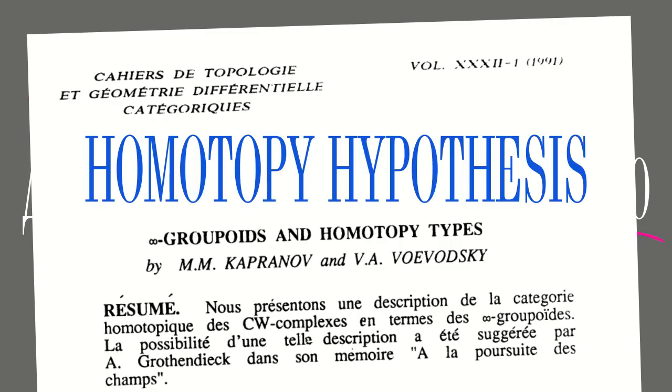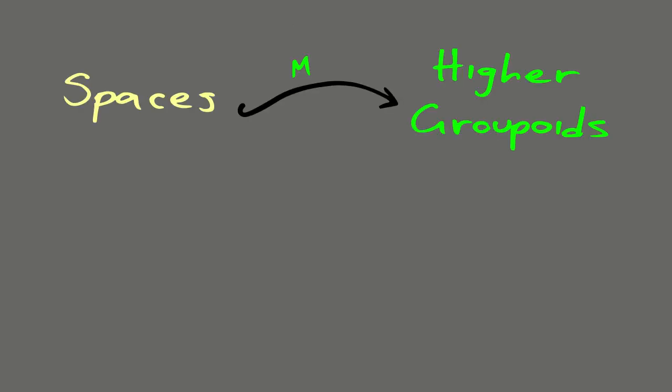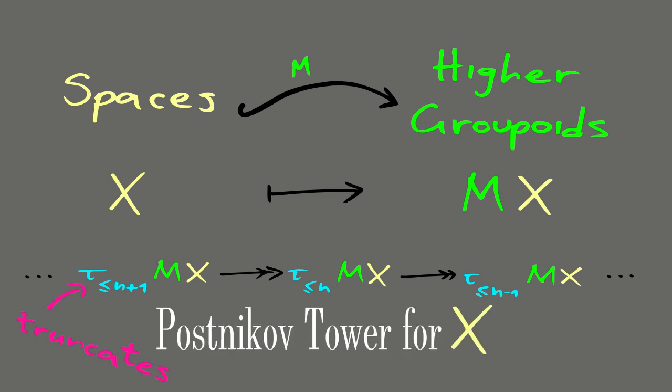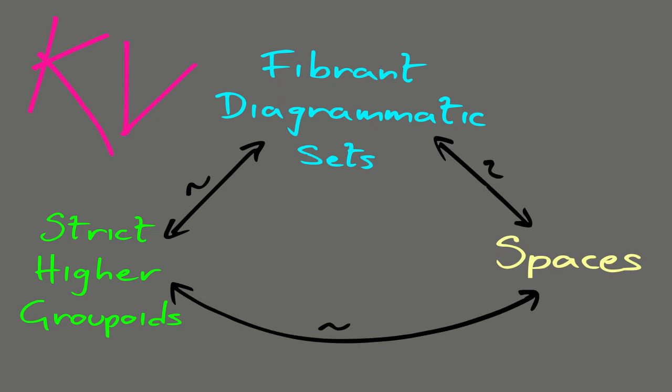KV's goal was to prove the homotopy hypothesis for a model of higher groupoids based on strict higher categories. KV's strategy was to prove that strict higher groupoids are equivalent to certain fibrant diagrammatic sets, and then prove the homotopy hypothesis for fibrant diagrammatic sets.